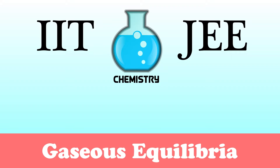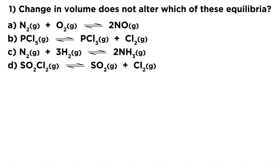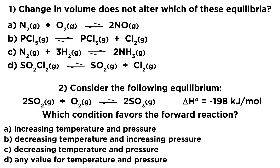Let's try a couple problems regarding gaseous equilibria. Number one: a change in volume does not alter which of these equilibria? We have four options, and altering the volume of the vessel would have an impact on each of these equilibria except one. Number two: consider the equilibrium 2SO₂ + O₂ → 2SO₃, with a delta H of negative 198 kilojoules per mole. Which condition favors the forward reaction? If you need to review Le Chatelier's principle, check out my tutorial on that topic, and when you're ready, give it a try.